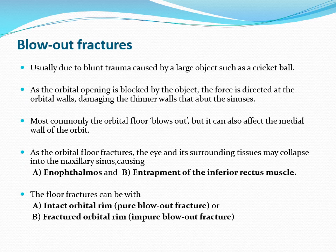Blowout fracture is another important topic that can be asked in examinations. It is due to blunt trauma where the object is large, blunt, and larger than the orbital ring — such as a cricket ball. As the orbital opening is blocked by the object, the force is directed at the orbital walls, damaging the thinnest walls adjacent to the sinuses. The force transmission goes along the walls and the weakest bones give way.